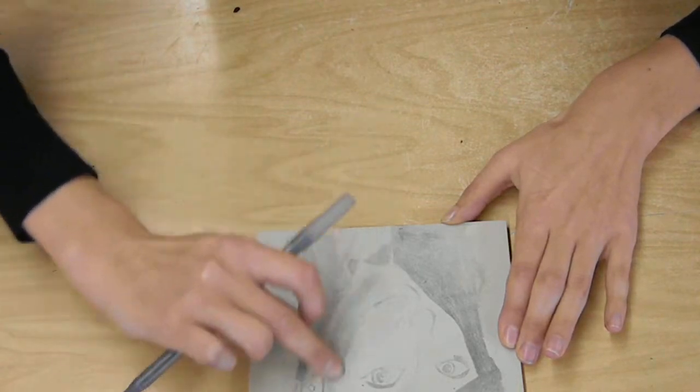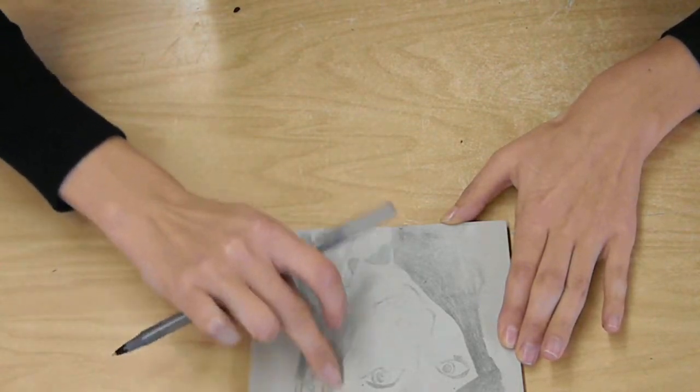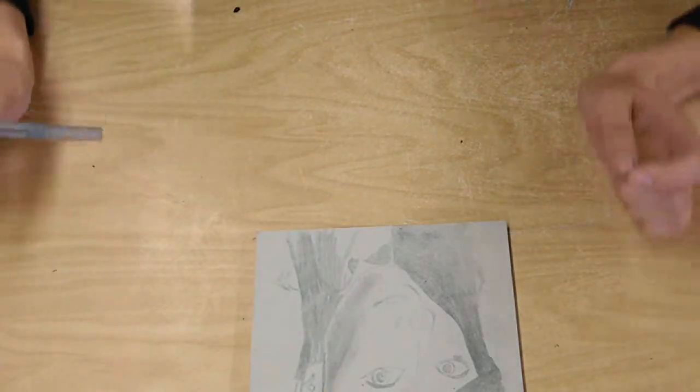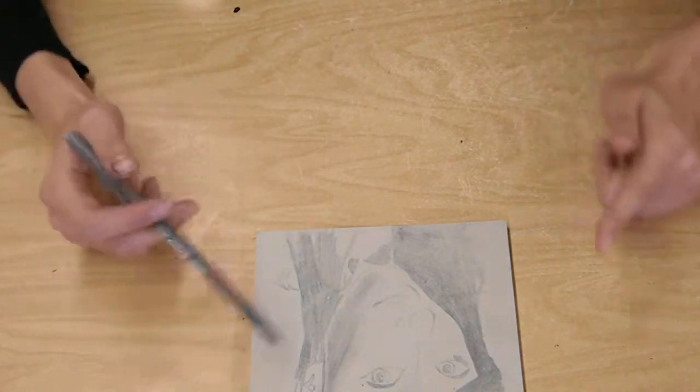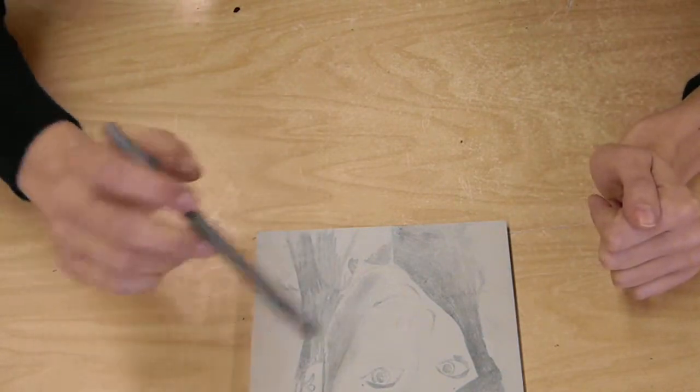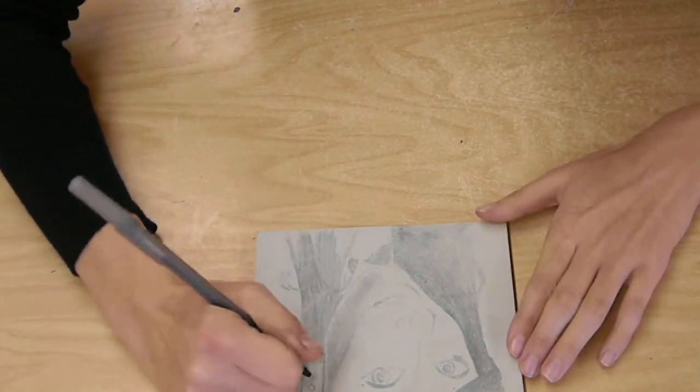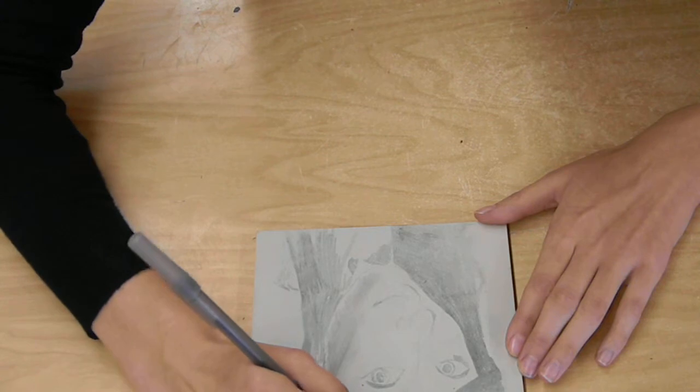I'm just going to smudge it out a little bit so it doesn't look like a beard is on my face. Now once you get it like this, when we're carving our prints we don't want this graphite to move around, so we're then going to take a ballpoint pen and just go over everything.